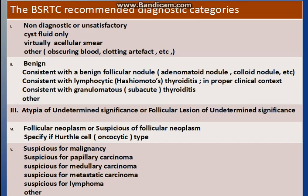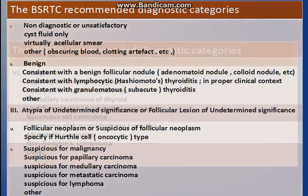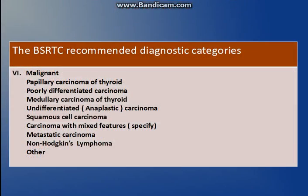The fifth category is suspicious for malignancy. In this, papillary carcinoma, medullary carcinoma — subtypes can be given even if we are only suspicious. The sixth category is when we are sure that it is malignant, and in this also subcategories should be given.